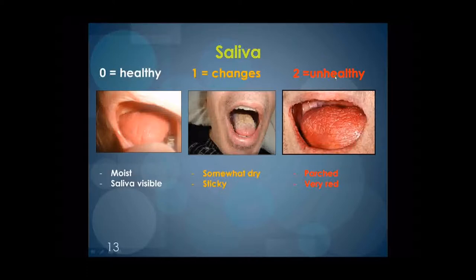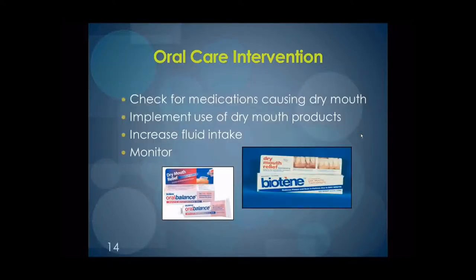Normal amounts of saliva vary considerably from one individual to another. Healthy mouths are usually moist, and saliva can be readily observed pooling beneath the tongue. When looking at level 1 changes, remember that habits such as mouth breathing, alcohol use, smoking, and/or chewing tobacco can result in changes to moisture levels. Tissues that are dry and sticky with little saliva present can first be treated in-house and monitored. A level 2 unhealthy condition such as parched, very red tissue with little evidence of saliva requires further investigation.